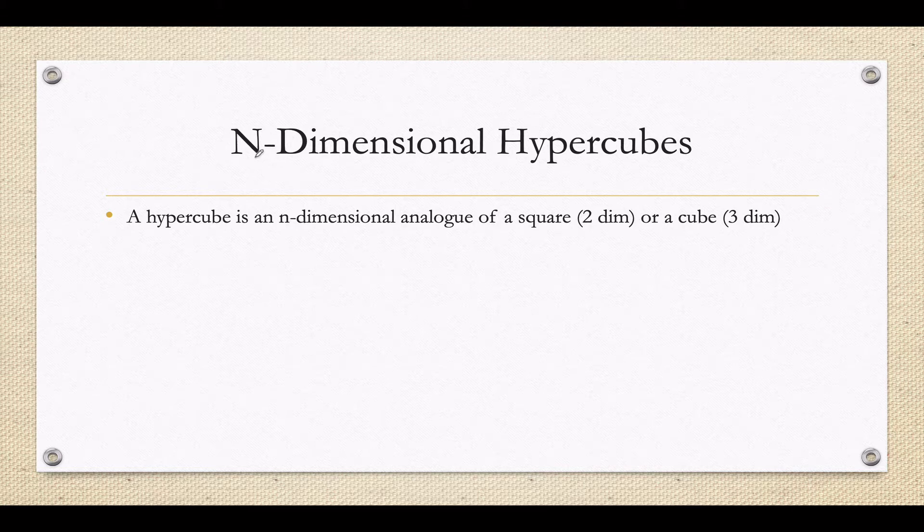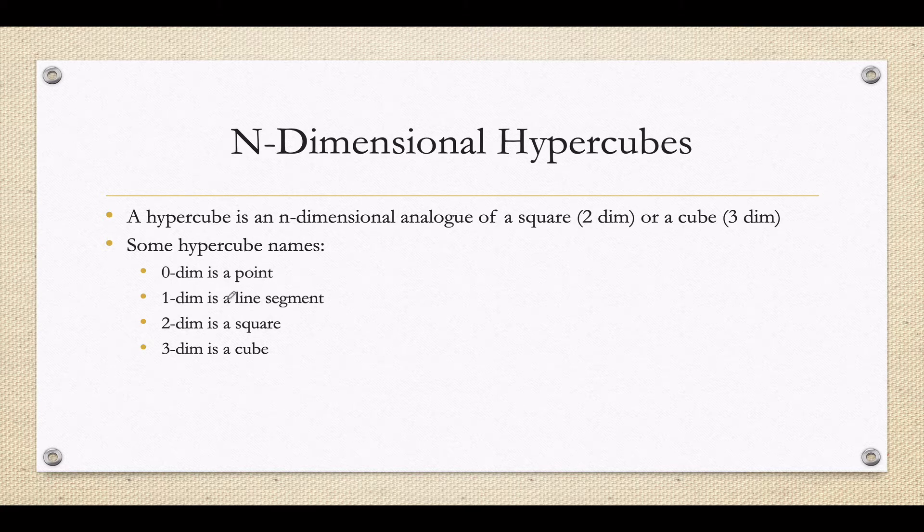What I want to talk about now are what are called N-dimensional hypercubes. A zero-dimensional hypercube, it turns out, is just a point. A one-dimensional hypercube is just a line segment connecting two points. A two-dimensional hypercube is a little bit more cube-y looking in that it's a square. And a three-dimensional hypercube is just a cube. You're probably familiar with all these names. You might be less familiar with this name, a tesseract. A tesseract is a four-dimensional hypercube.